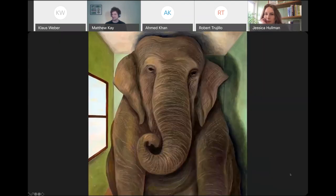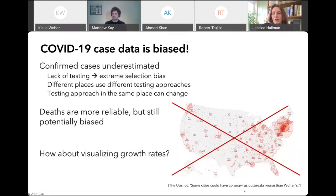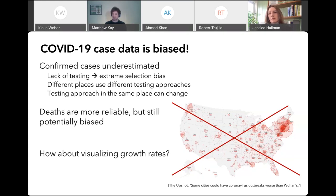However, there's a massive problem with all of the maps I just showed: they're all showing COVID cases, and we know for a variety of reasons that COVID case data is pretty biased. Confirmed cases are likely to be underestimated, potentially by a lot. There's been a lack of testing in various places, and in most places getting tested means you're already experiencing symptoms. We know from experts that most people who get COVID will not experience any symptoms, so we're missing some people. And even if you have symptoms, getting tested in some countries like the U.S. or UK has been quite difficult, making comparisons between different regions difficult.